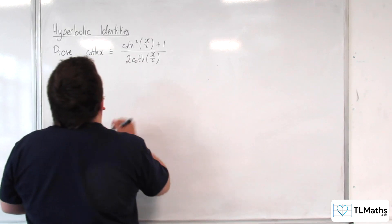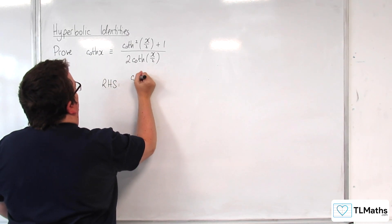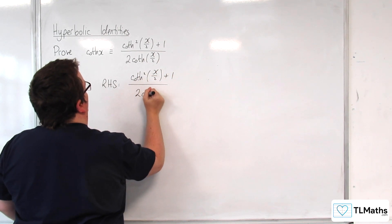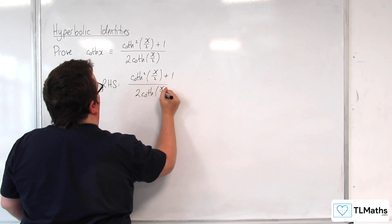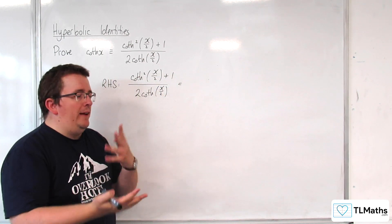So what I'm going to do is I'm going to start with that right hand side. So coth squared x over 2 plus 1 over 2 coth x over 2, and I'm going to go into coshes and sinhs here.